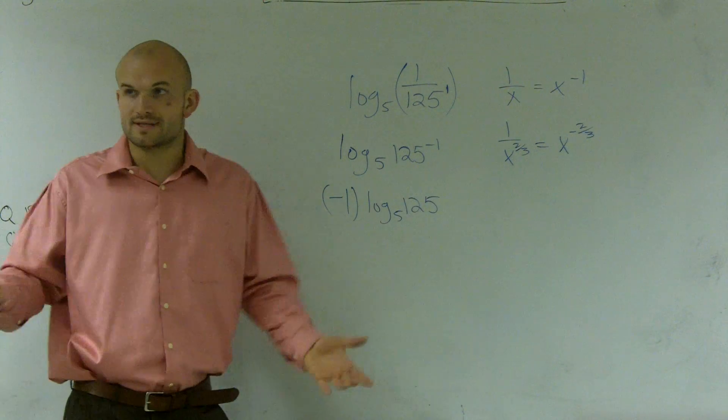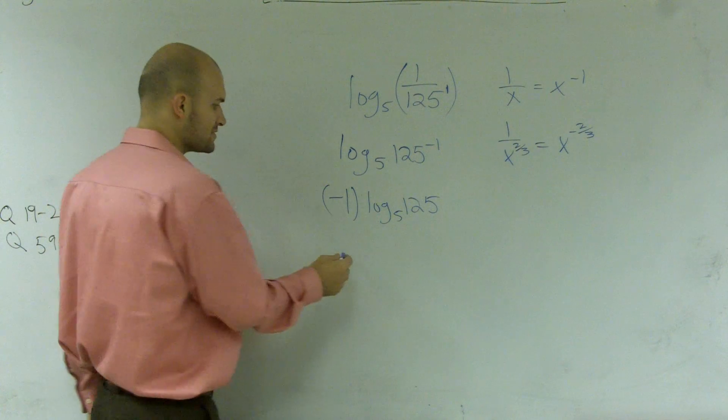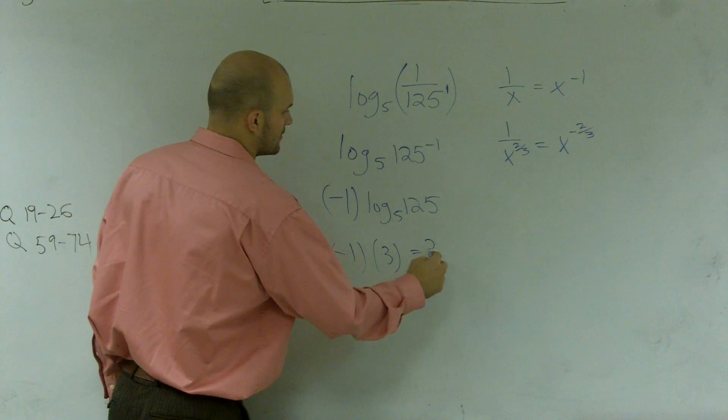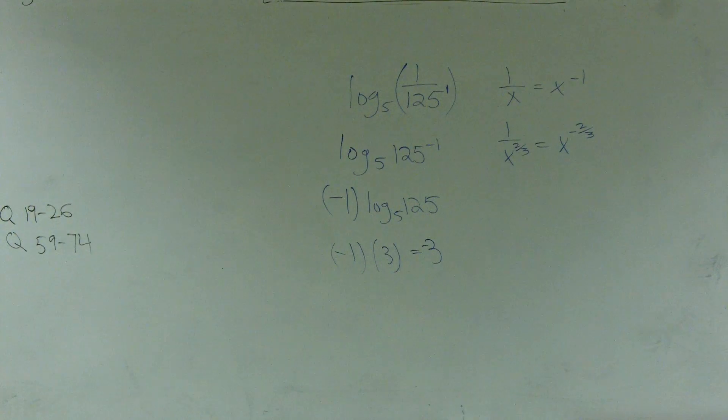So then I have to know what is the logarithm state. 5 raised to what number gives me 125? That answer is 3. So I have negative 1 times 3 equals a negative 3. Okay? So I'll do the last one.